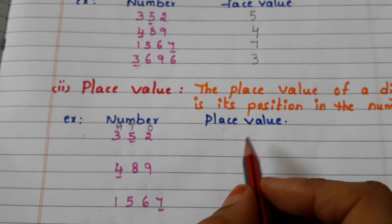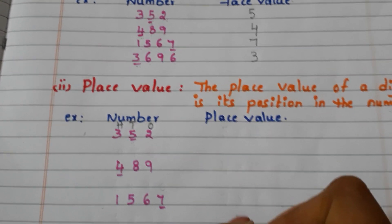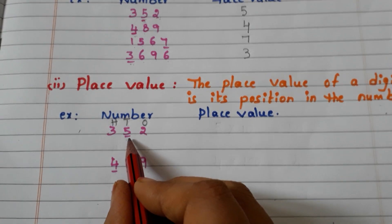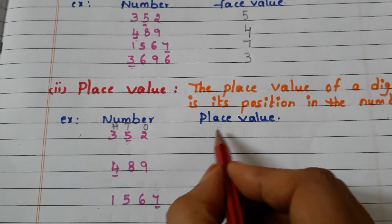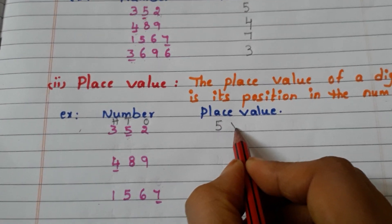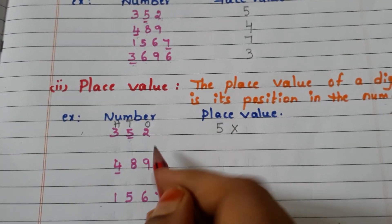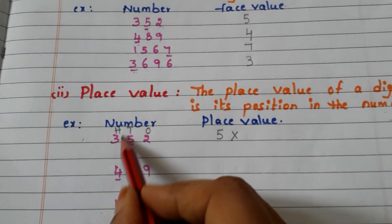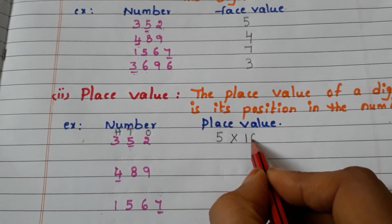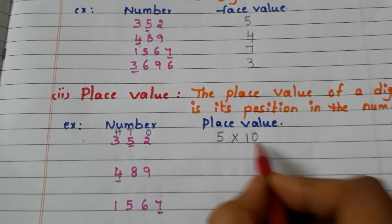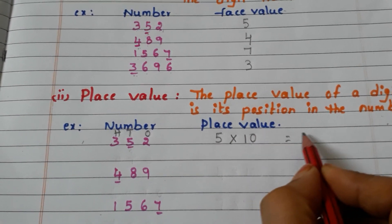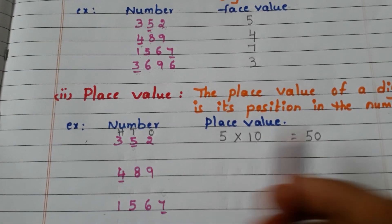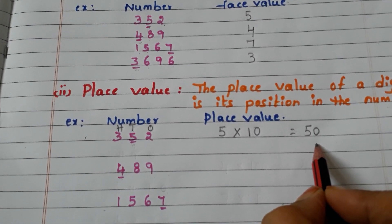Place value means first we write the face value. What is the face value of 5? 5 itself. Then, in which place is 5? The 10's place. So we write 10. 5 tens are how much? 50. So the place value of 5 is 50.